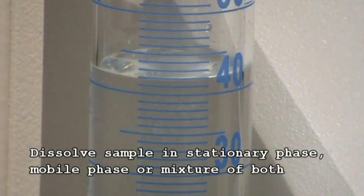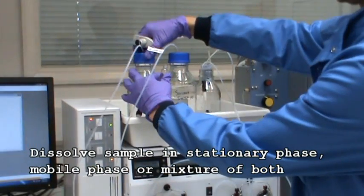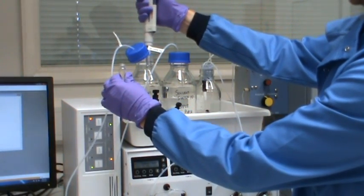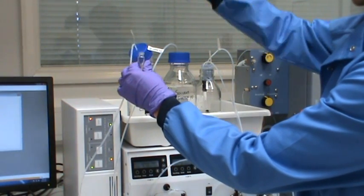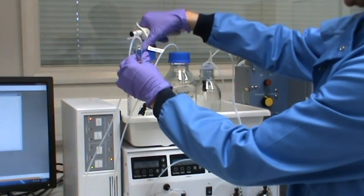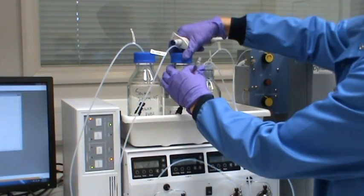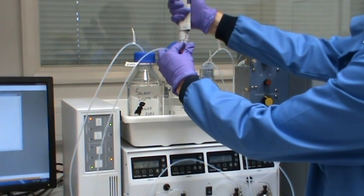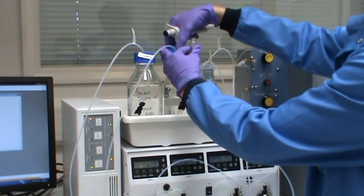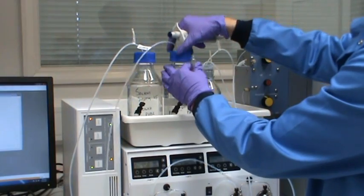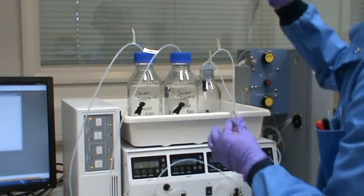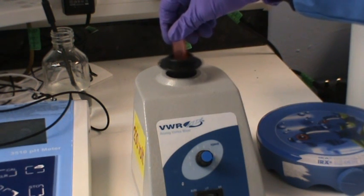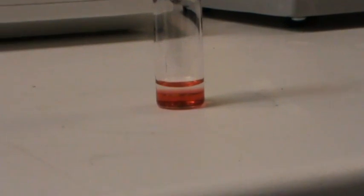Dissolve your sample in a mixture of mobile and stationary phase, approximately 1 ml of each. Make sure the sample is fully dissolved. You should see two solvent layers in the sample.